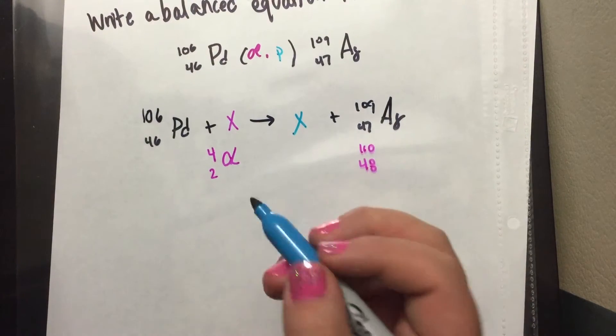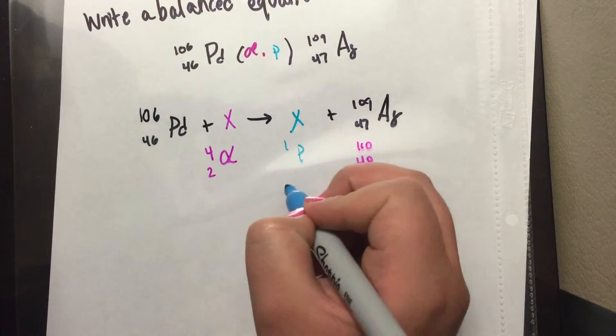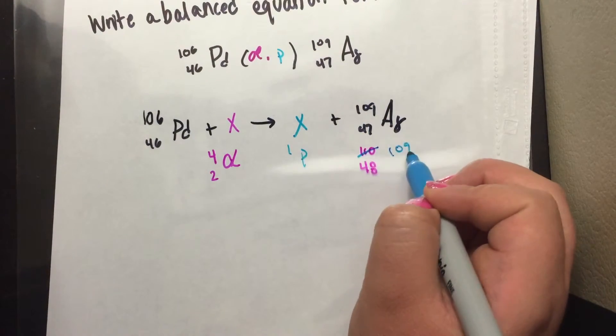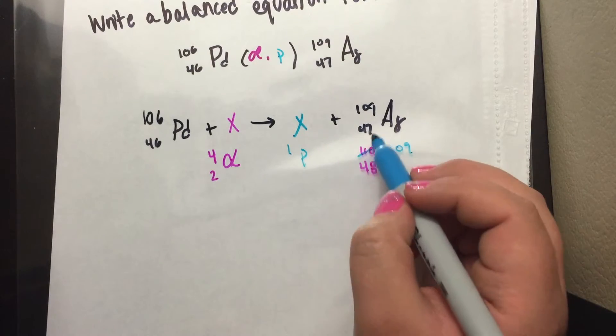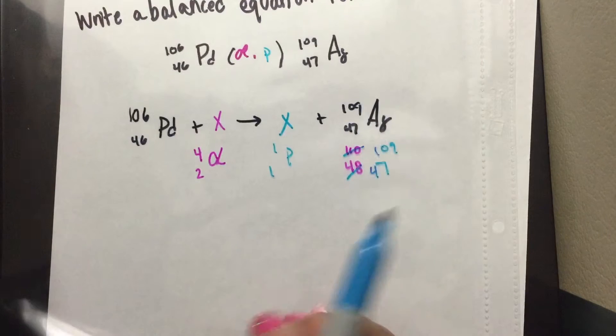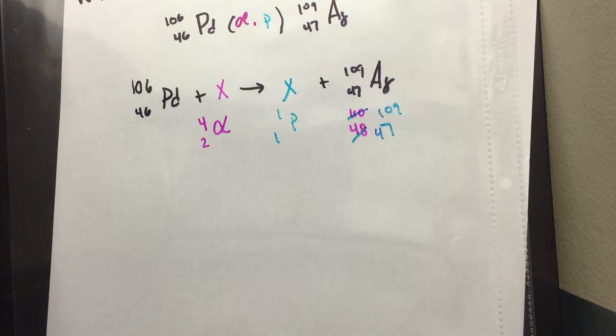So what can we do to P to give us these numbers? So first, if we put a 1, that would give us 109 when you subtract. So we would have 109. And when we add another 1, we need to get 47, which by doing that we would get 47.